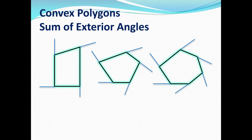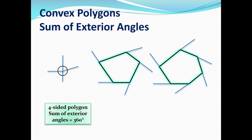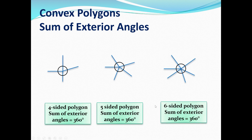Let's say we have the following convex polygons. We extend the lines to represent the exterior angles. Now, what happens if we take the quadrilateral on the left and zoomed out until you cannot see the quadrilateral anymore? Then what happens to all the exterior angles? Well, as you can see, if we add them all up and the polygon is super tiny or very far away, we have 360 degrees. Similarly, with a five-sided polygon and a six-sided polygon, we always end up with 360 degrees no matter what.